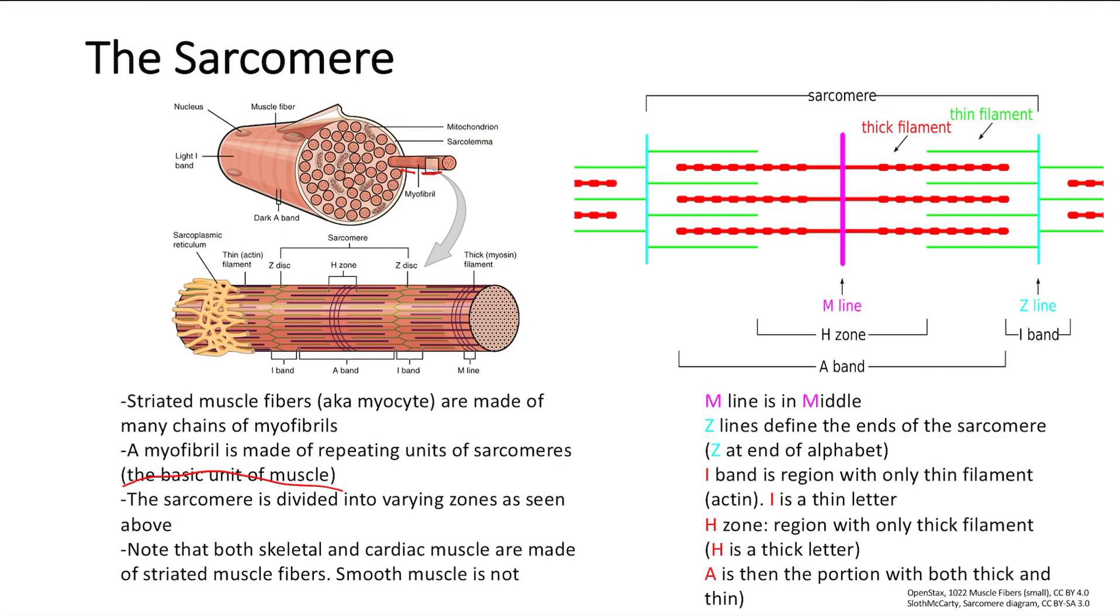Now when we look at the sarcomere, we have varying regions. M line is straight down the middle. M line is down the middle, so easy to remember. Z line here is the definition of the end of each sarcomere. They're the bookends of the sarcomere. Z is at the end of the alphabet, so Z is at the ends of the sarcomere.